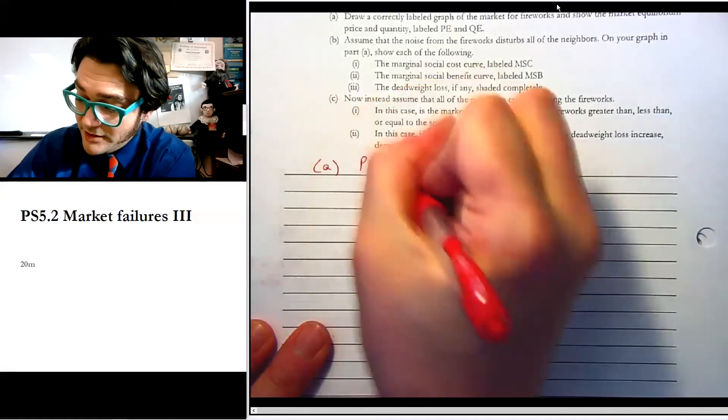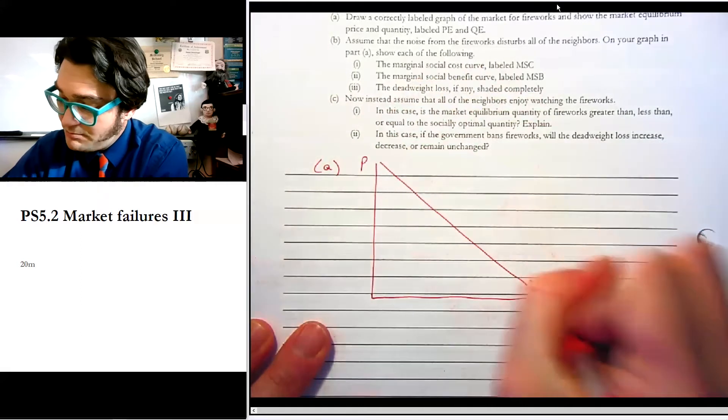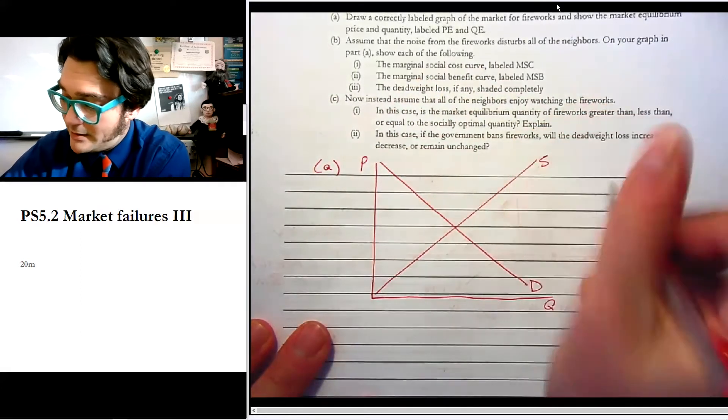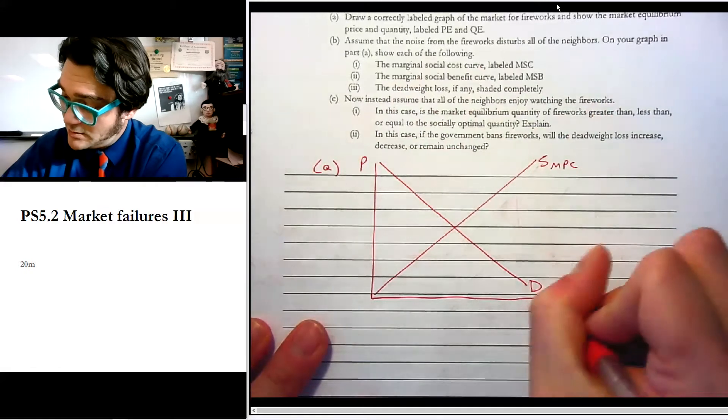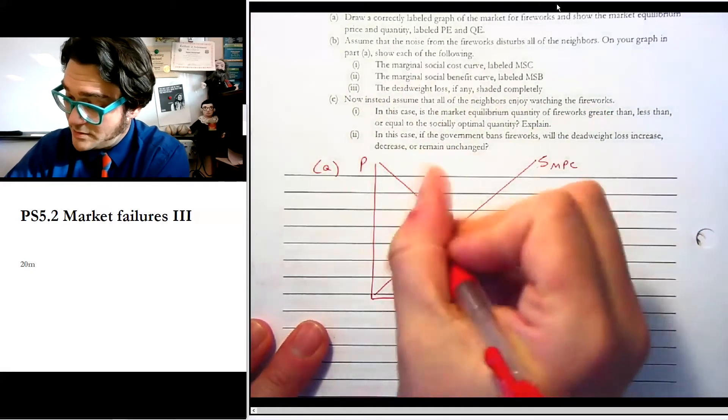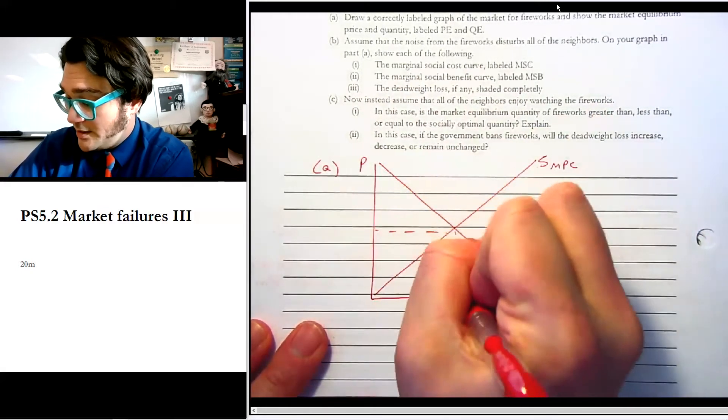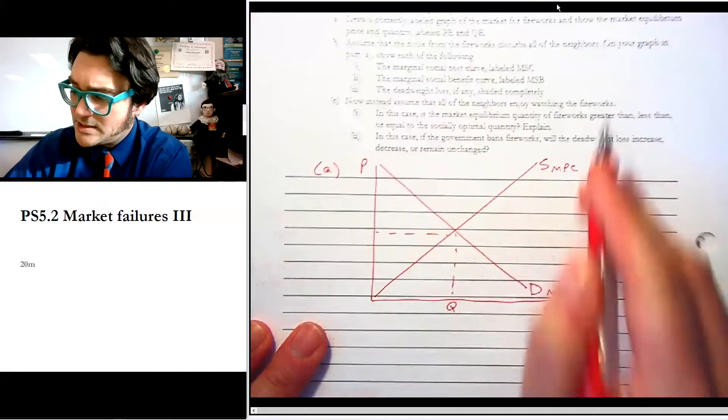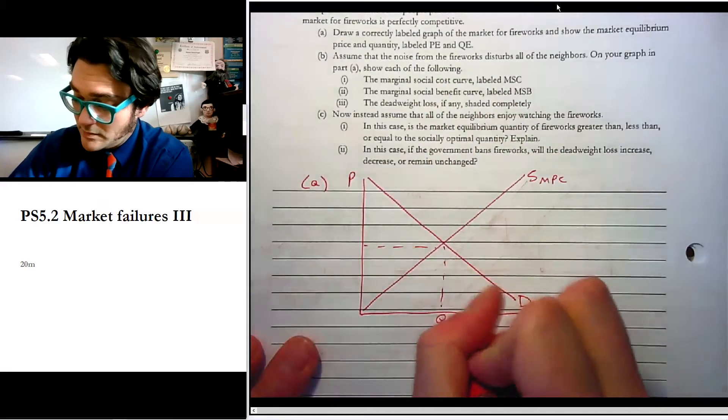So quantity of fireworks, demand, and supply. So this is our marginal private cost, marginal private benefit. And Q, what did it tell us? QE, PE. Okay.